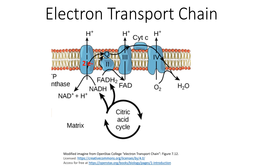What will happen next is coenzyme Q, which is an electron transporter, will go to complex one and take the two electrons from complex one, meaning that coenzyme Q will oxidize complex one and coenzyme Q will gain those two electrons.